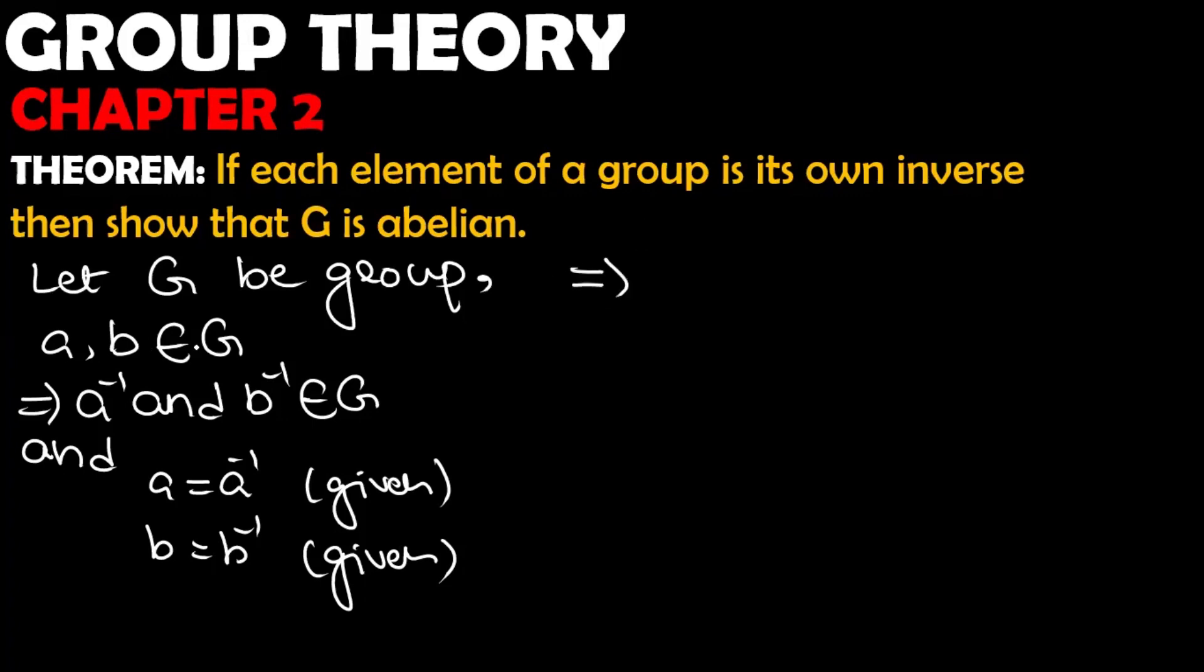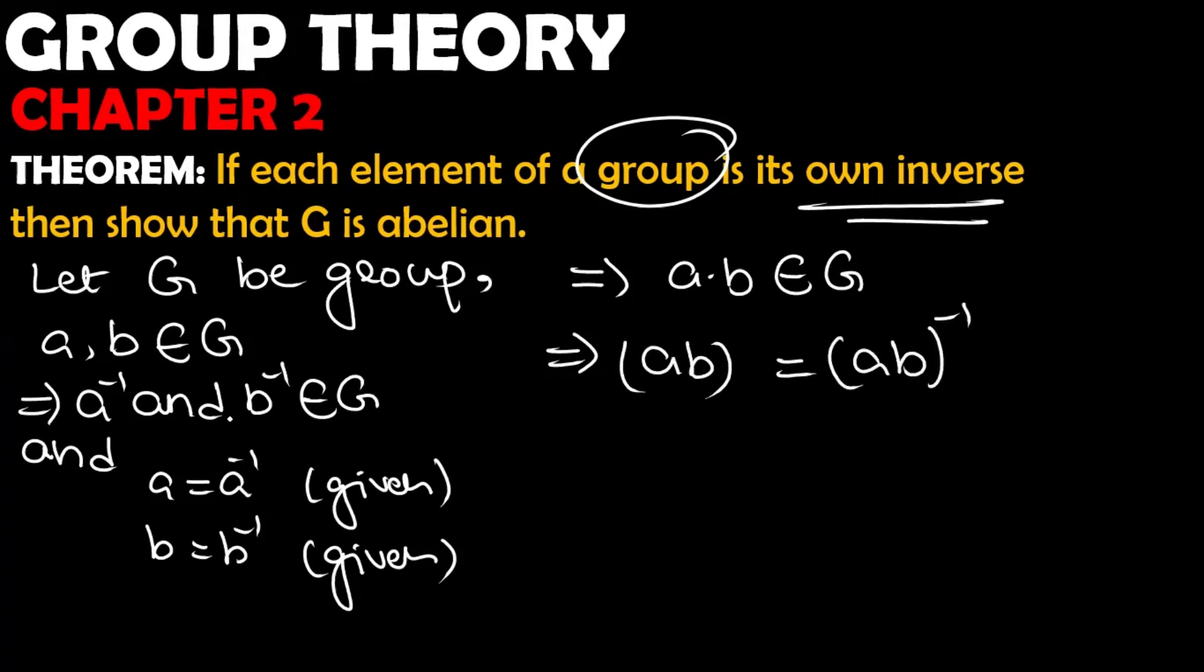So if A and B belong, then A and B's product belong to G. And if AB belongs to G, this implies that AB equals AB inverse, because every element is its own inverse. Now, AB inverse equals B inverse A inverse equals BA. This implies that G is abelian.